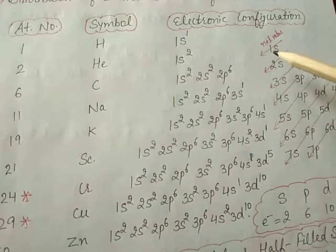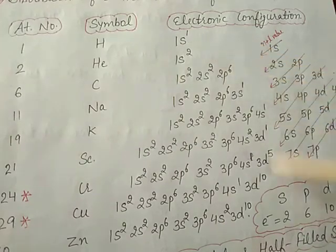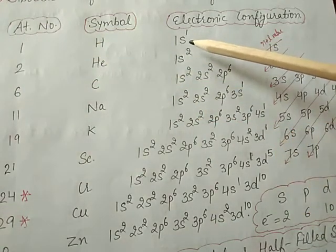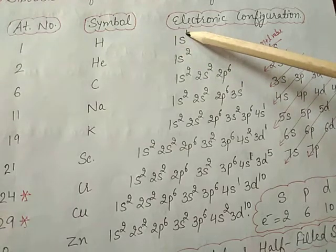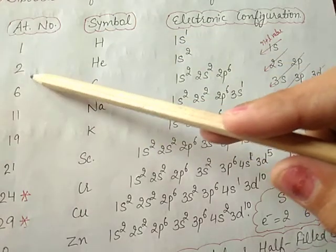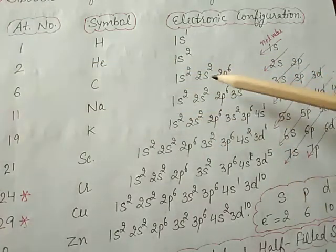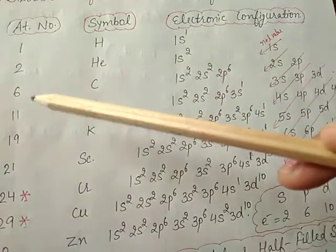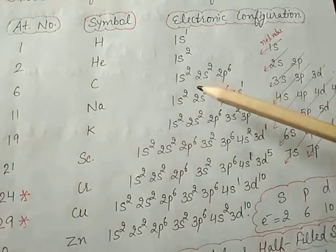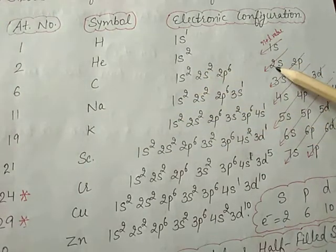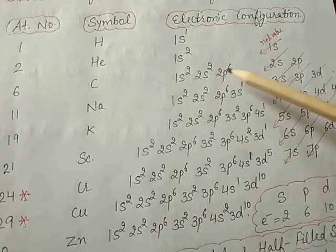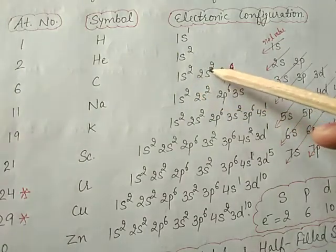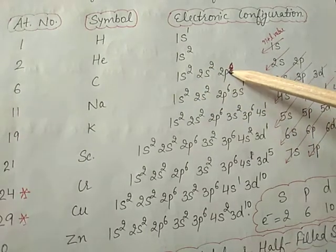Atomic number 1, symbol H, electronic configuration: 1s1. Atomic number 2, He: 1s2, this shell is completely filled. Atomic number 6, carbon: 1s2 2s2 2p2, total 2+2+2=6 electrons.